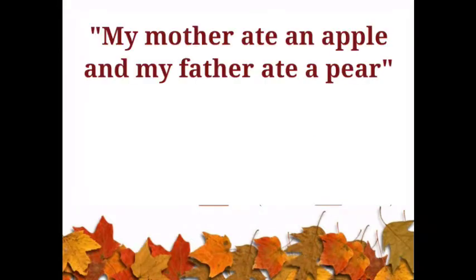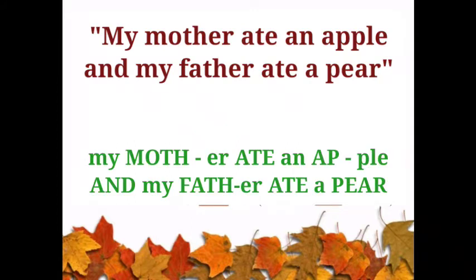Let's have an example. Read the following line and see if you can hear the stressed syllables: 'My mother ate an apple and my father ate a pear.' Could you identify the syllables which were given more emphasis than others? Let's make it more clear by capitalizing the stressed syllables. Here, we have an alternating stressed and unstressed syllable pattern — all even-numbered syllables are stressed and all odd-numbered syllables are unstressed. That means the first syllable is unstressed, the second is stressed, the third is unstressed, the fourth is stressed, and so on.